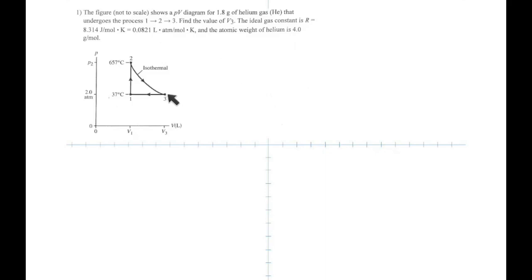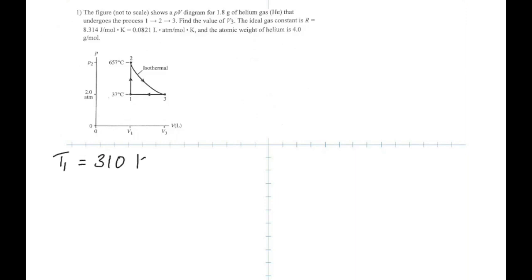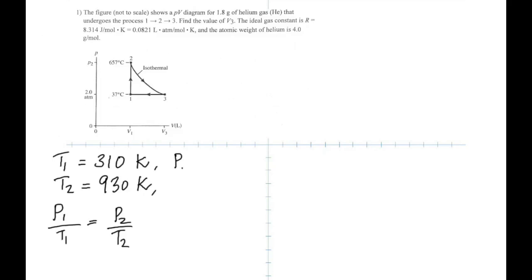The ideal gas constant is given in two units, but we will always be using joule per mole Kelvin, which is 8.314. The atomic weight of helium is also given. T1 is 310 Kelvin (37°C) and T2 is 930 Kelvin (657°C). Using P1/T1 = P2/T2, we can find pressure P2.